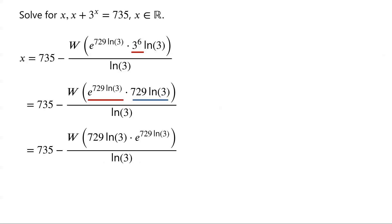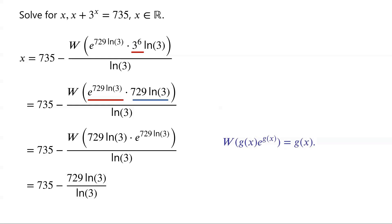By definition, W of g(x) times e to the power of g(x) equals g(x). By applying this, the numerator is equal to 729·ln(3).